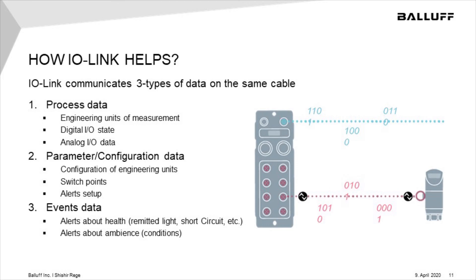IO-Link offers three types of data on the same cable. First is process data — the primary purpose of that sensor and what it needs to provide for the process. Second is parameter or configuration data, where you can set ambient conditions, switching points, alerts, or even calibration data. Third is events data, where the sensor, after detecting an abnormal condition, fires a signal to let the PLC or controller know through the master that something is wrong. This makes IO-Link even more suitable for diagnostic-ready technologies.